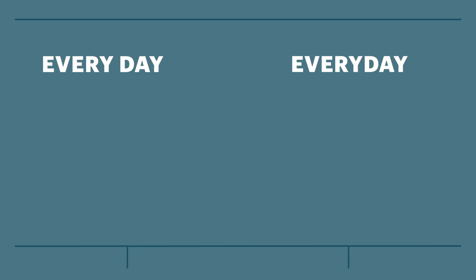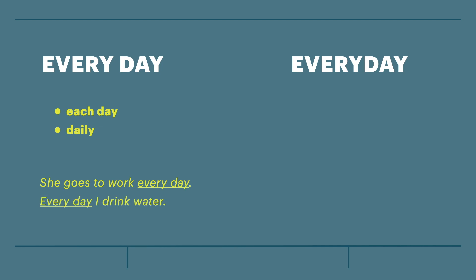'Every day,' written as two separate words, is the same as saying 'each day' or 'daily.' For instance, she goes to work every day. Every day, I drink water. 'Every day' is an adverbial phrase. You can use 'each day' and 'daily' to check if 'every day,' written as two separate words, works just fine in the sentence.